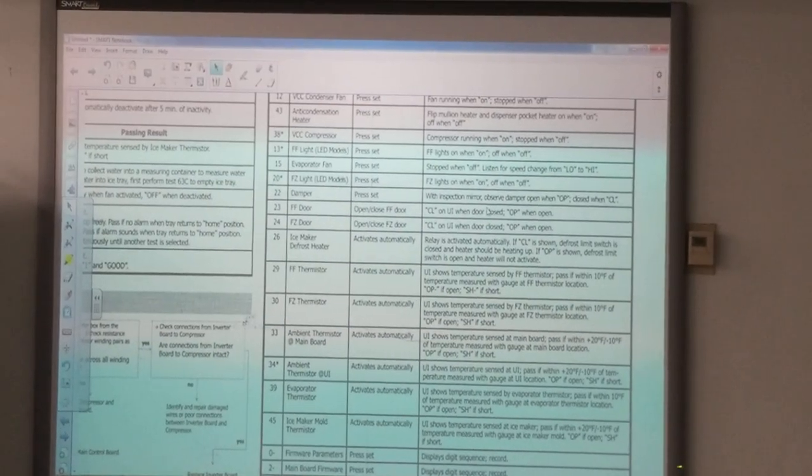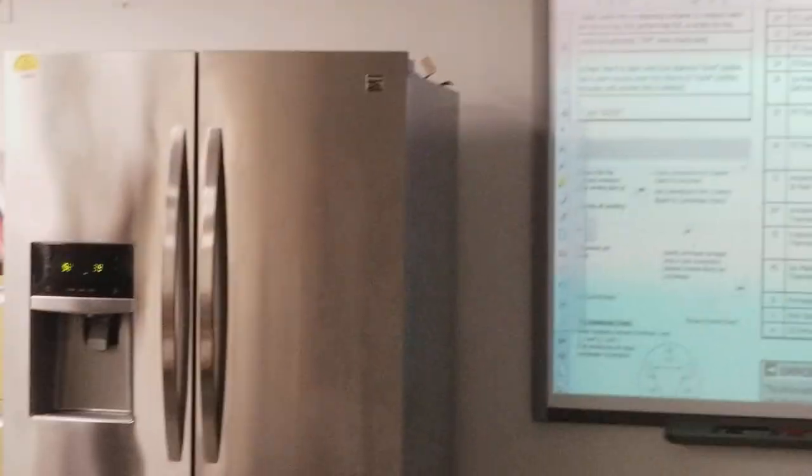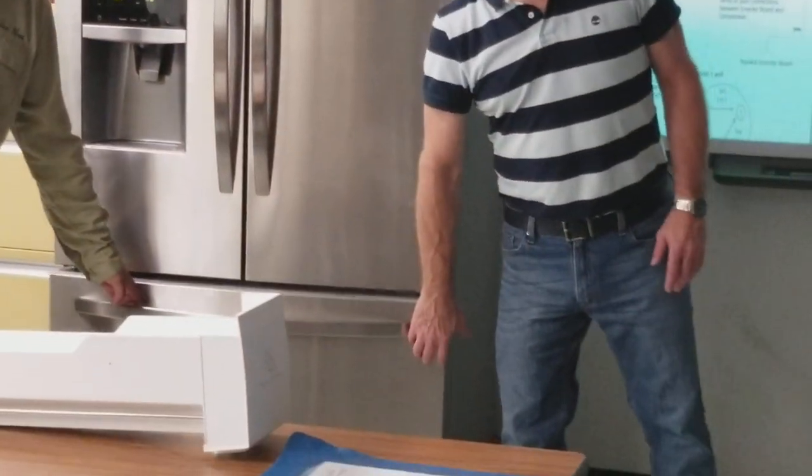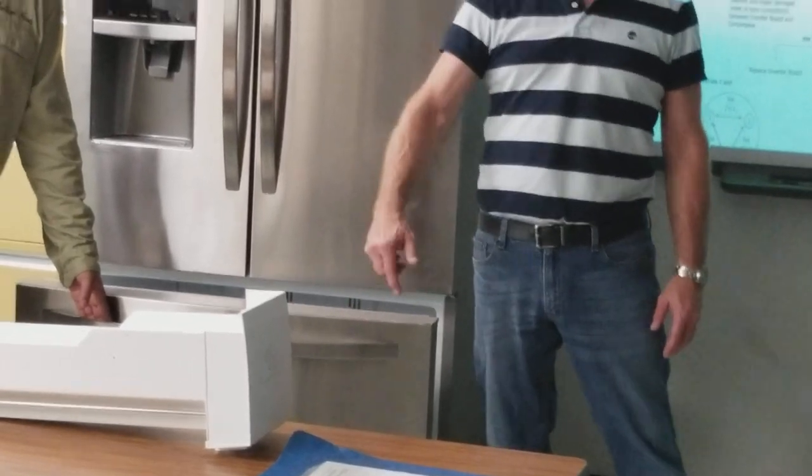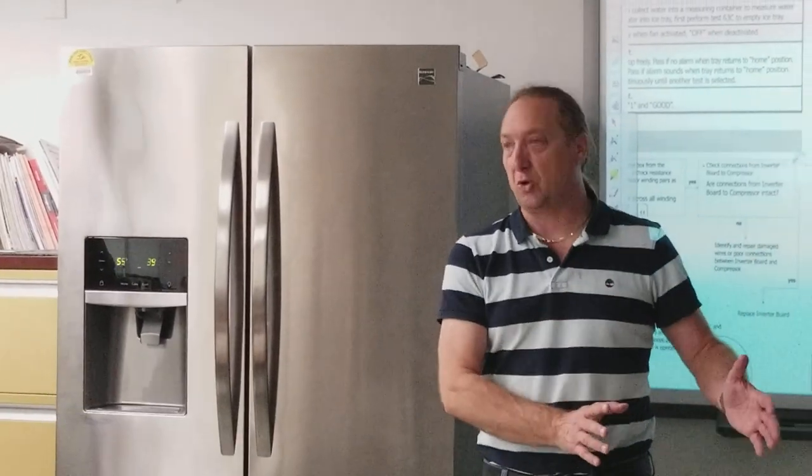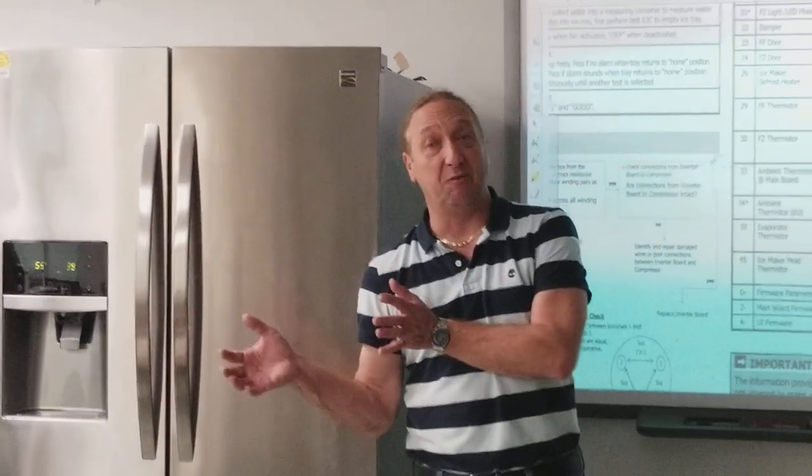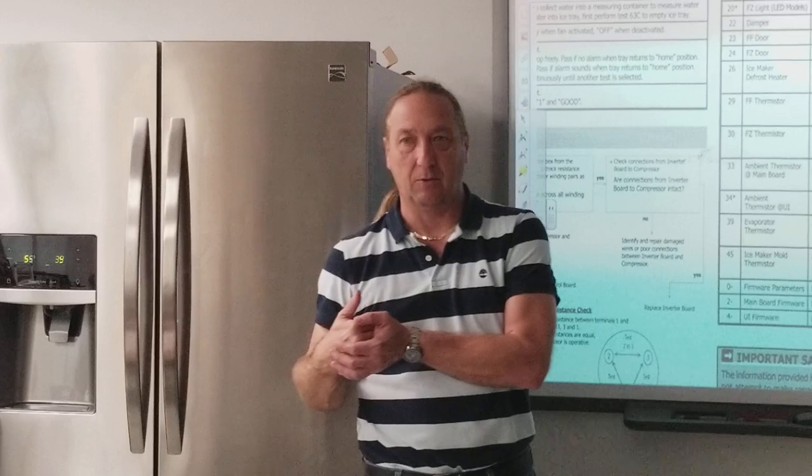Okay, let's go to 39. The evaporator thermistor - that is the evaporator in the freezer, and that's telling the unit the temperature of the evaporator, not the air temperature in the whole box. We have a freezer thermistor for that. This is the evaporator. It acts as a safety for defrost. Even though we have a defrost heater and a defrost thermostat, we have a sensor on that evaporator also that's telling the box how cold or warm that evaporator is.